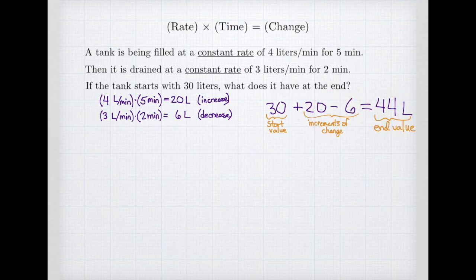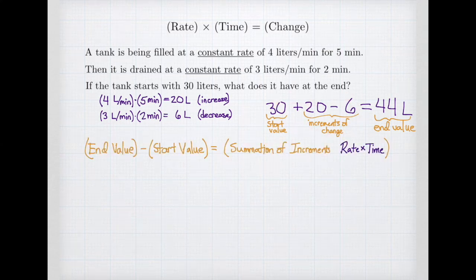There's another way to look at it. We take our ending value and subtract our starting value, and that will always equal our increments of change. Our ending value minus our starting value — this is talking about how much water is in the tank — will always be equal to the summation of our increments, where those increments were found by multiplying our rate times our time.